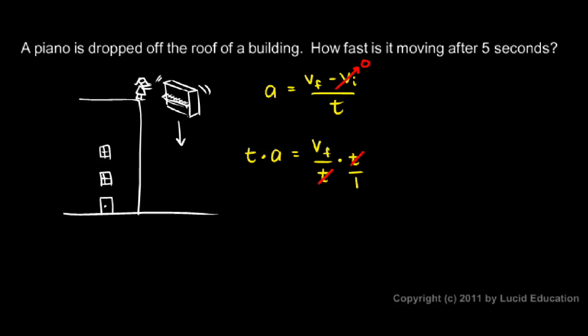So all that's left on the right side is Vf, the final velocity. And what's on the other side is t times a, so I'm going to rewrite that like this. The final velocity is a times t. That's typically how that equation is written. And that's how you get there from your definition of acceleration. So the final velocity is simply the acceleration times the time.